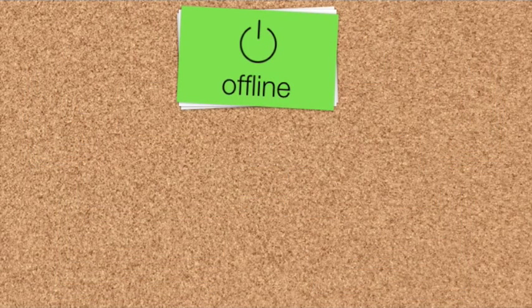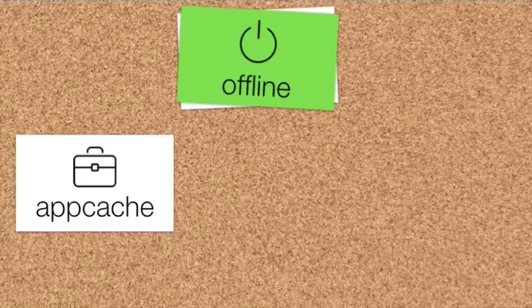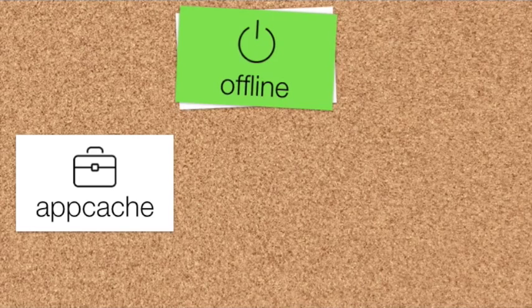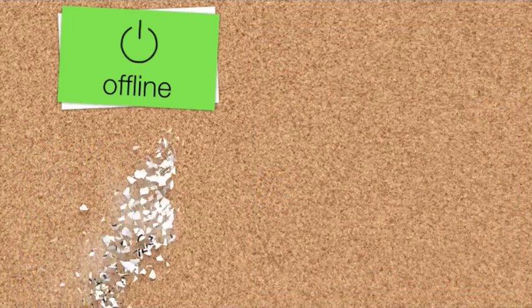Moving on to offline. Native apps work really great offline — you can continue using them when you enter the tube. Apps like Pocket have built their whole concept around being offline and reading later. On the web, we only had AppCache. AppCache is okay-ish at first sight, but Jake Archibald wrote an important article, 'Application Cache is a Douchebag,' pointing out that it's so complex to use in production that it's almost impossible to work with. So we need something else.